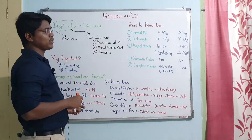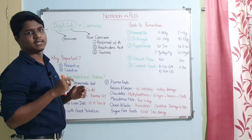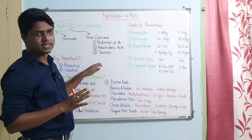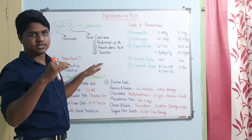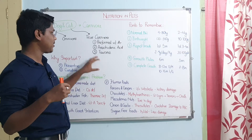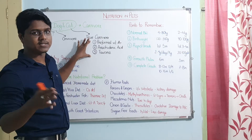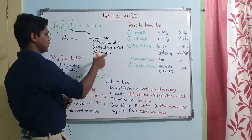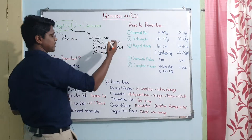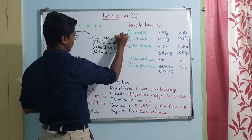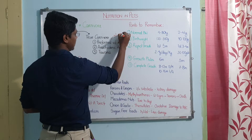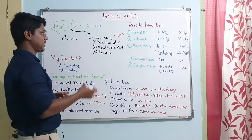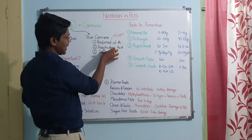Cats, on the other hand, are true carnivores. Cats cannot be maintained on vegetarian diets. They need specific nutrients I will discuss individually later. Cats need pre-formed Vitamin A, which is mostly found in animal livers — chicken, mutton, or goat liver — because Vitamin A is stored in the liver as a fat-soluble vitamin.